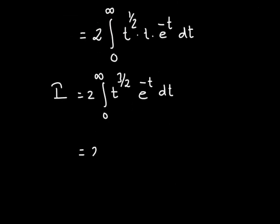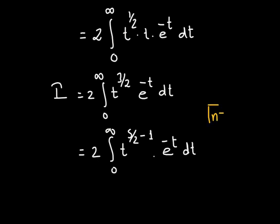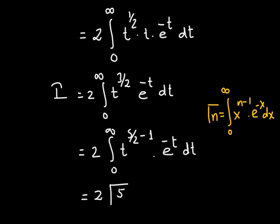The exponent 3/2 can also be written as 5/2 minus 1. This is done so that we can use the definition of the gamma function: gamma of n equals the integral from 0 to infinity of x raised to the power of n minus 1 times e raised to the power of negative x dx. Hence, we have 2 times gamma of 5/2.